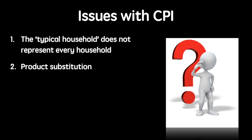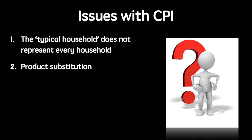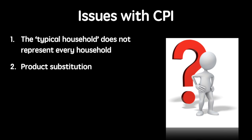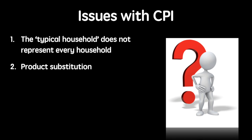Second, product substitution. As goods and services become more expensive people switch away from them. For example, if beef becomes more expensive people may start consuming more lamb. Therefore, the CPI can overstate inflation if it accounts for goods and services that people are consuming less of due to increases in price.